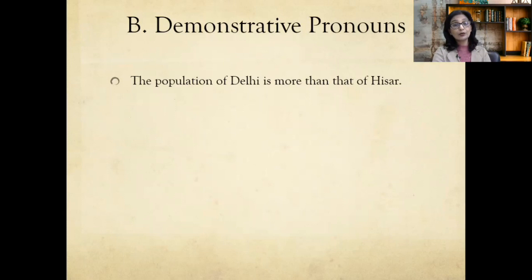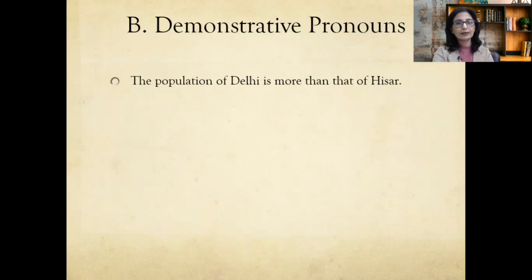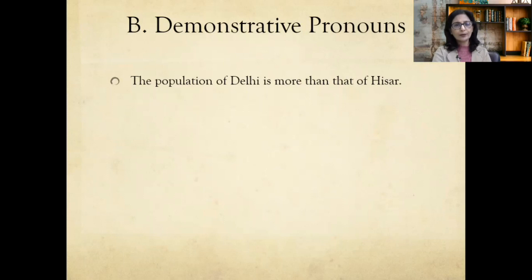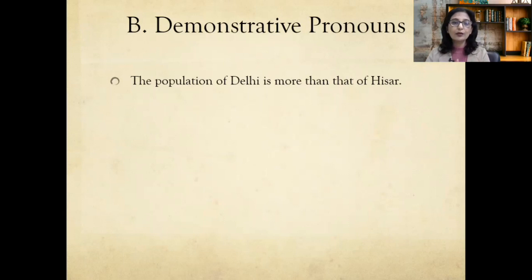When the subject is singular — like 'population' — we use 'that of.' When the subject is plural, we use 'those.' For example: 'The temples in South India are more in number than those in North India.' This is the correct usage of demonstrative pronouns.